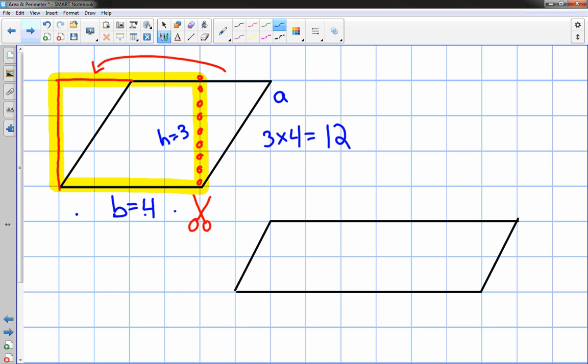So the area is equal to 12 square units. Now we'll try this longer, skinnier one over here in the lower right hand corner. Again, what I try to have kids do is do this on graph paper first, visualize it as a rectangle if you can without changing any of the dimensions.